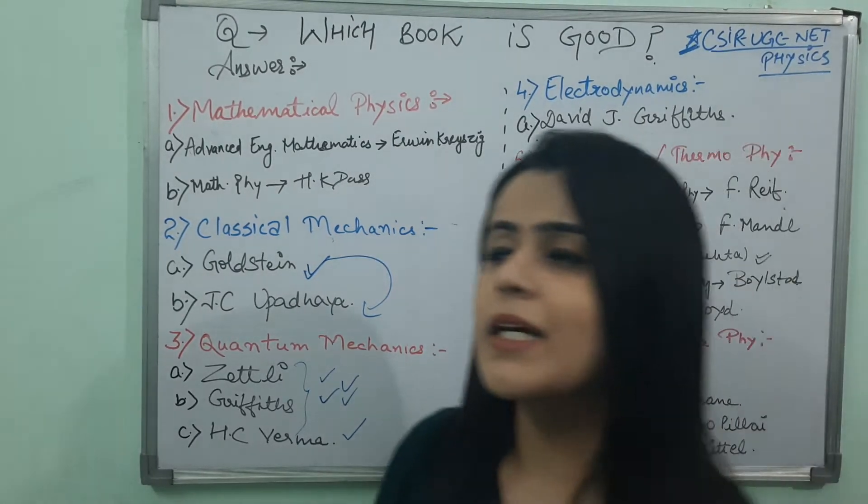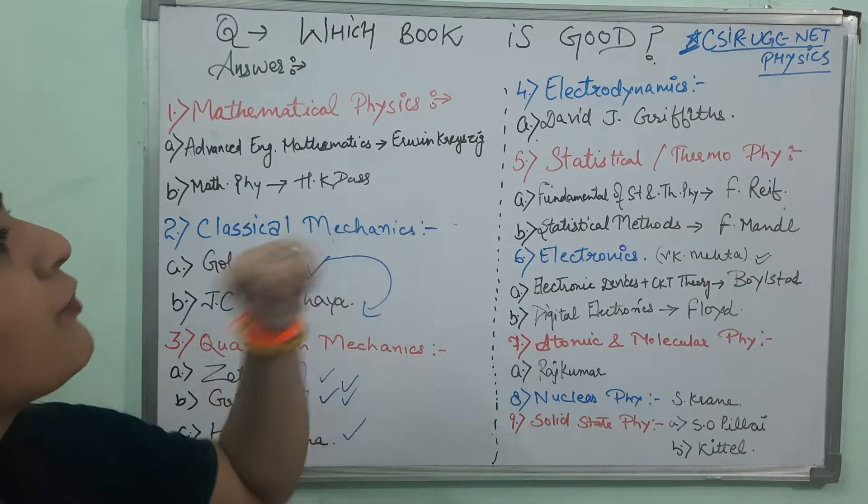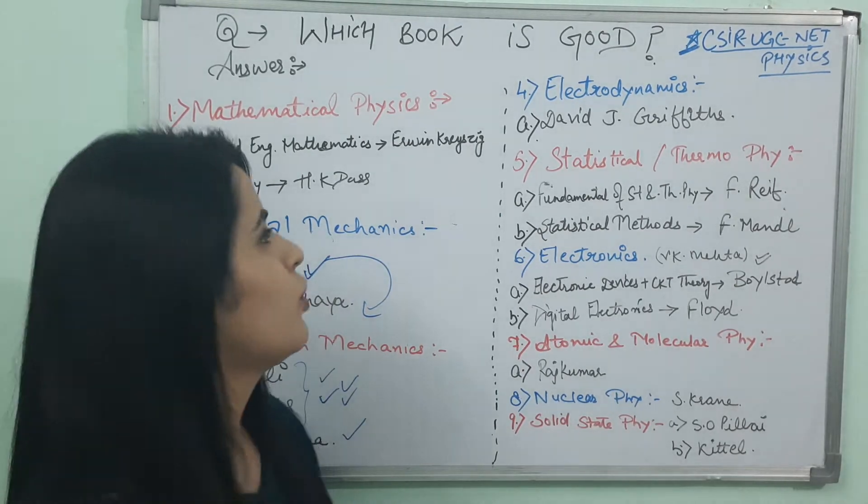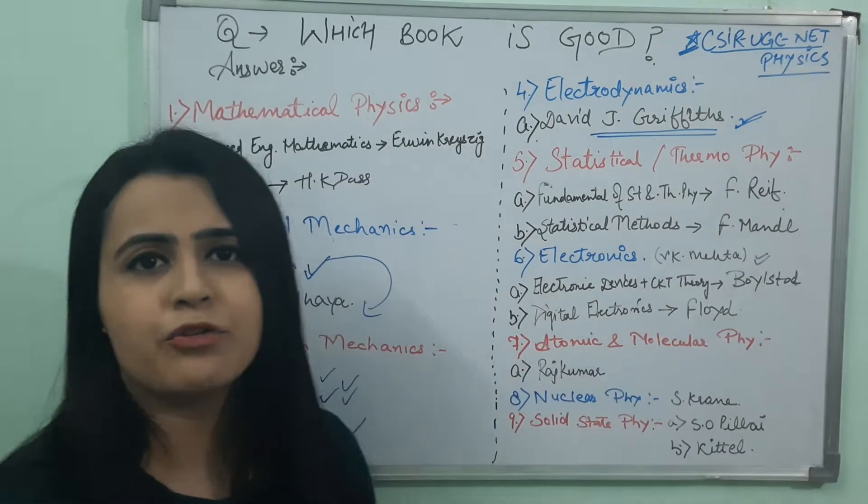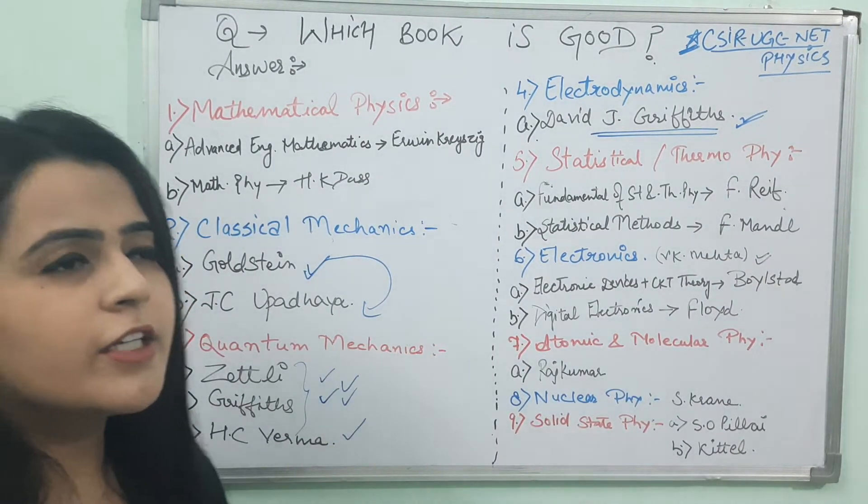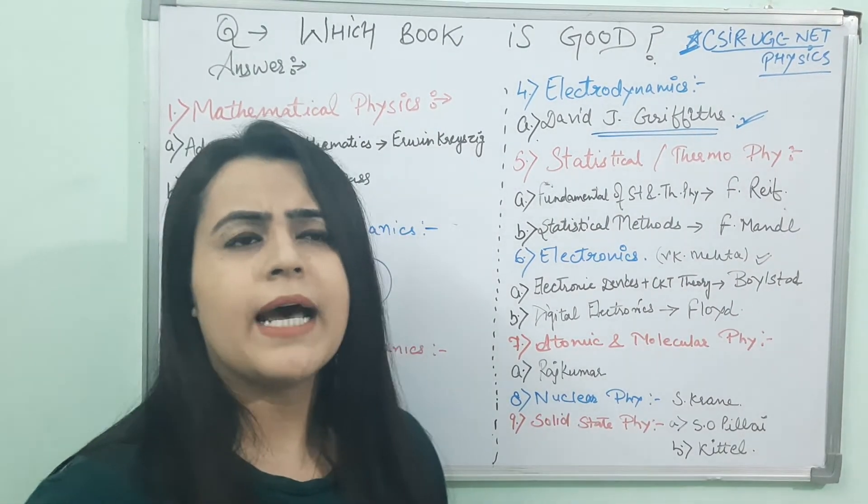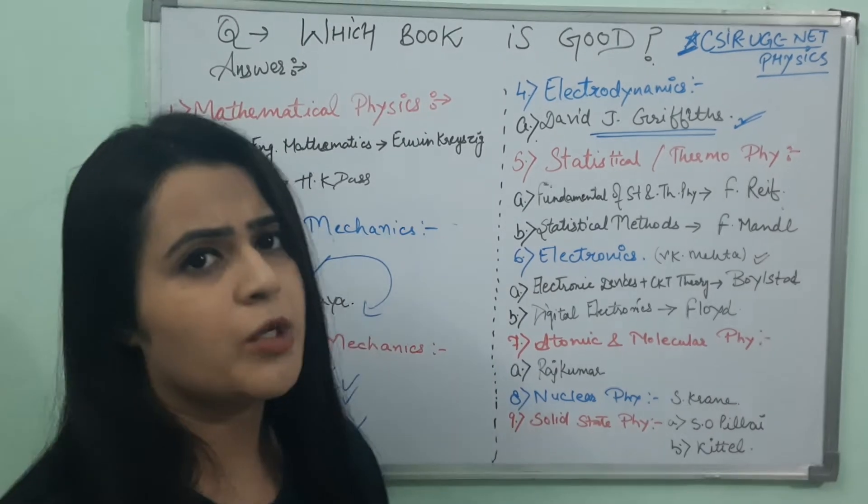Now, my topic is another book example for paper is Electrodynamics. Obviously Griffiths. Griffiths is a very important and good book for Electrodynamics. In this book, he covers very good examples. I just prefer this book for Electrodynamics part.